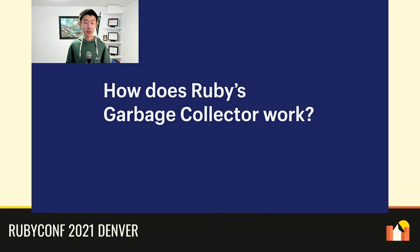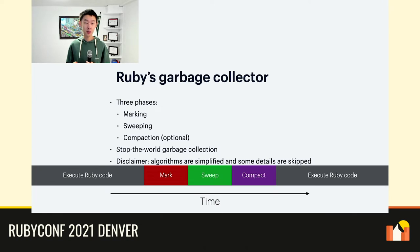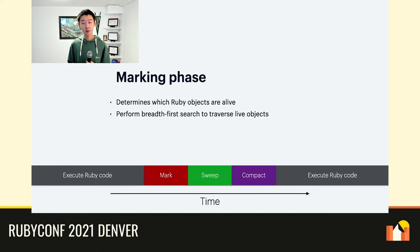Now that we've looked at how memory is laid out inside Ruby, let's look at how Ruby's garbage collector works. Ruby's garbage collection consists of three distinct phases: marking, sweeping, and compaction. The last phase, compaction, is optional and does not run unless manually enabled. Ruby's garbage collection has stopped-the-world semantics, meaning that Ruby code is not executed when the garbage collector is active. The garbage collector in Ruby is fairly complex, so we'll provide a very high-level overview containing all the information you'll need for this talk. Let's first look at marking.